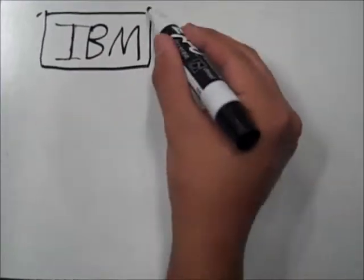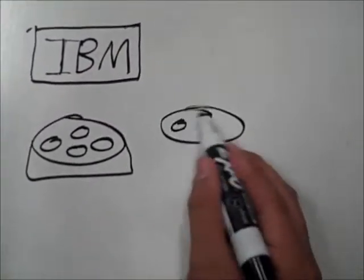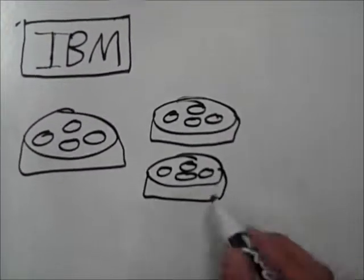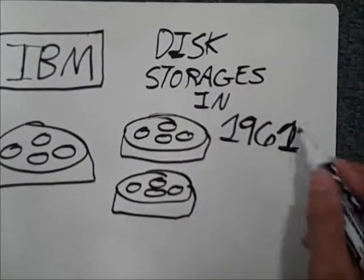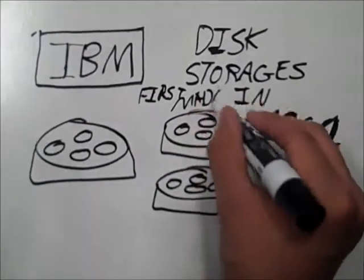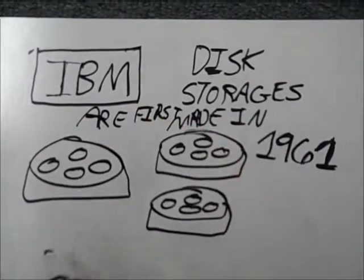The IBM disk storage unit was sold by IBM in 1961. It was the first disk-based storage system on the market and could hold up to 28 million characters per disk.